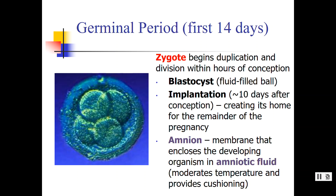The amnion encloses the organism directly, and the amniotic fluid — where all of that cell duplication is going on — moderates not only the temperature, but also provides a kind of gravity-less cushioning for the organism so that it's steady, comfortable, and ready to grow for the next nine months.